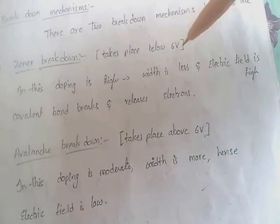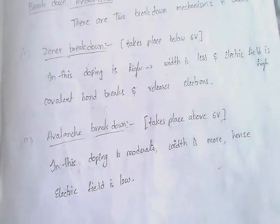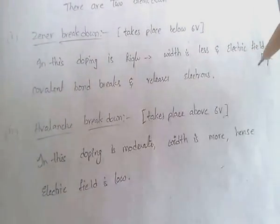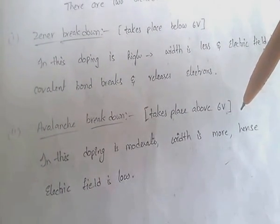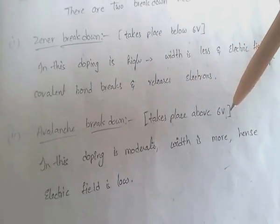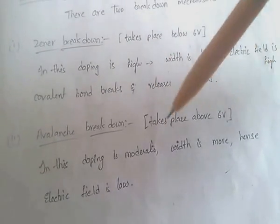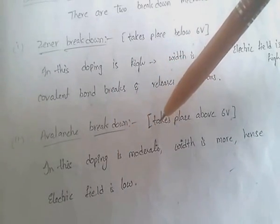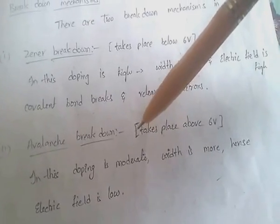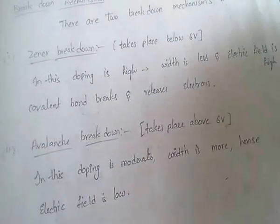Very important: Zener breakdown takes place below 6 volts and avalanche breakdown takes place above 6 volts. In avalanche breakdown, the covalent bond breaks and releases electrons. The doping is moderate, the width is more, and hence the electric field is low.